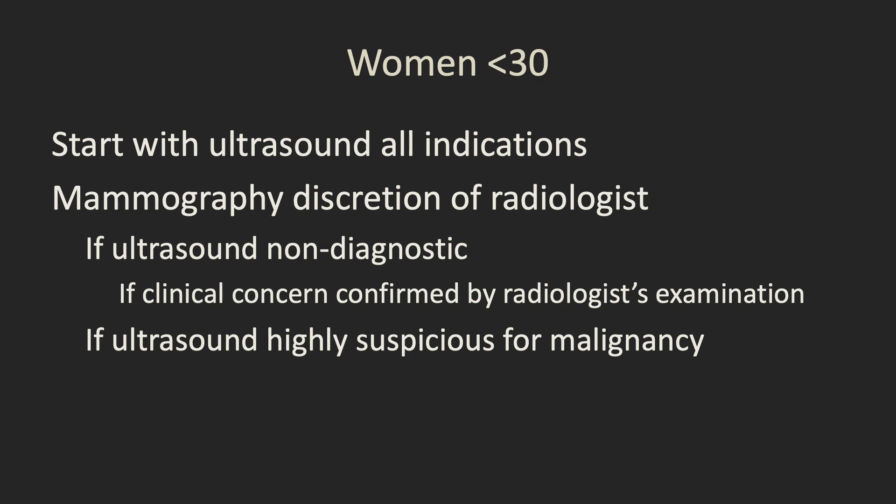For women under 30 years, we have a slightly different algorithm to reduce the radiation exposure to their more sensitive breasts. We tend to start with ultrasound for all indications, with mammography at the discretion of the radiologist. When might we go on to do mammography? If the ultrasound is non-diagnostic but on clinical examination we really feel there is a true palpable mass we're concerned about, or if the ultrasound is highly suspicious of malignancy — for example a spiculated mass — we'll do bilateral mammograms to assess extent of disease and look for calcifications. If the patient examination feels like there's nothing there or it feels like a fat lobule, we will not usually go on to do a mammogram in these patients.